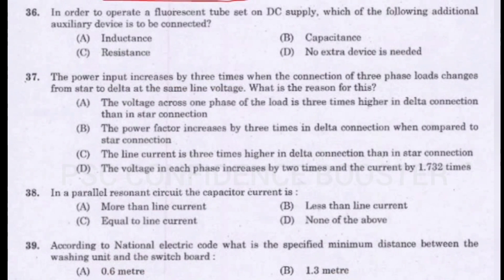Question number 36. In order to operate a fluorescent tube set on DC supply, which of the following additional auxiliary device is to be connected? Option A - Inductance. Option B - Capacitance. Option C - Resistance. Option D - No extra device is needed. Answer is Option C: Resistance.